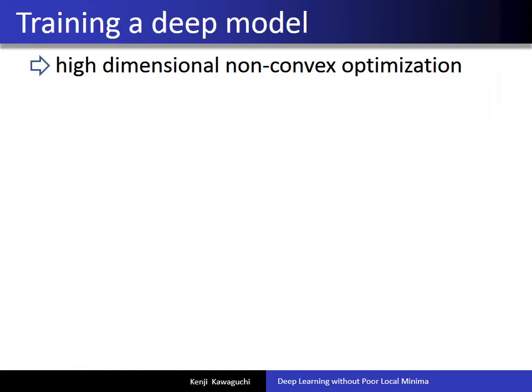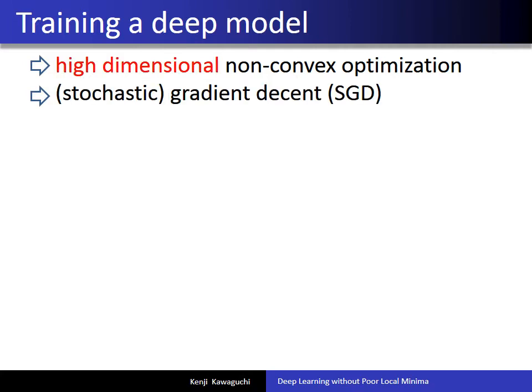But one aspect of deep learning that is relatively not well understood yet is training. Training a deep model is usually done via high-dimensional, non-convex optimization. In order to scale for high dimensionality, we usually have to use some local greedy algorithms such as gradient descent or its variants.